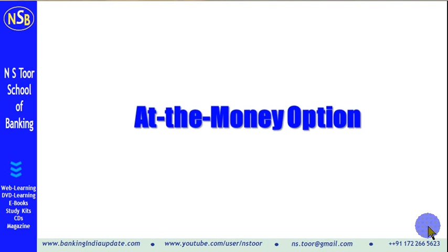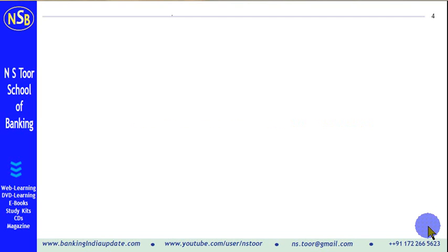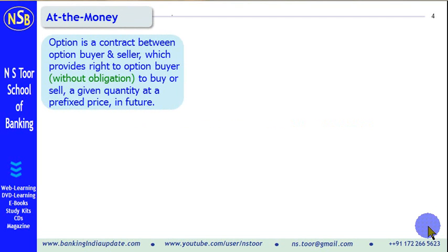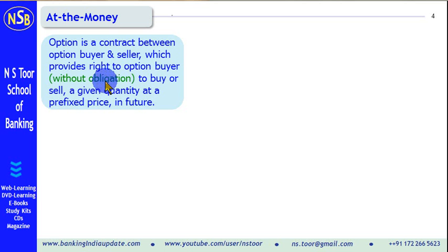Hello Friends! In this lecture we shall discuss At the Money Option. First of all, what is meant by an option? An option is a contract between two persons — the buyer of the option and seller of the option. This agreement gives the right to the option buyer, without any obligation, to buy or sell a given quantity at a prefixed price in future.